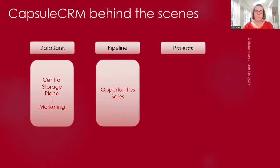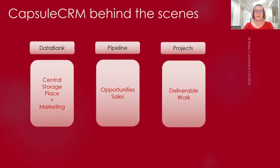Next we have the pipeline. This is where we can manage our opportunities and our sales, keep on top of our sales process, and manage individual opportunities — all added together to give us the pipeline we're looking at currently versus a 100% success rate. The third area, another fantastic area, is projects. This is where we can manage the work that we deliver to our clients. In the pipeline and in projects we have the ability to add a track — a series of tasks that saves us reinventing the wheel every single time.